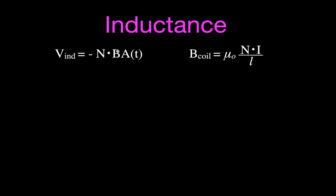Since we have B in the Faraday's law equation and we're talking about a coil of wire, I'm going to substitute that expression for B directly into the Faraday's law equation. So I have minus N — this is the N — times B substituted in blue, times the change in area over time.